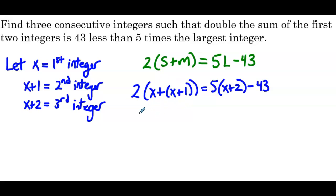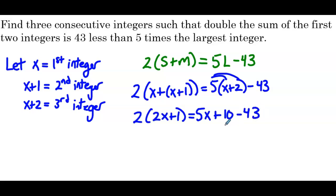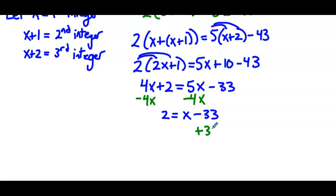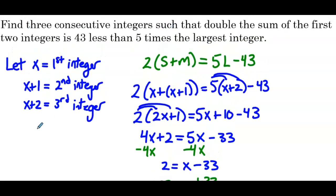On the left side, combine like terms in the parentheses first: 2 times (2x plus 1). Distributing on the right side gives 5x plus 10 minus 43. Distributing on the left gives 4x plus 2. Combining like terms on the right gives 5x minus 33. Subtracting 4x from both sides gives 2 equals x minus 33. Then adding 33 to both sides, we get x equals 35. So the three consecutive integers are 35, 36, and 37.